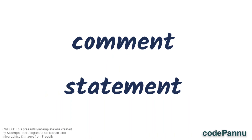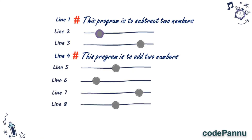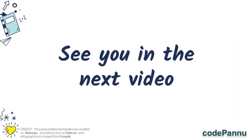This is why we have to tell Python to leave comments out when running the code. We do that using a very special character. The special character used to tell Python that a statement is a comment is the hash symbol. When we put a hash in a statement, Python will know that whatever comes after the hash is a comment and it will leave that part out. There are many ways to write and use comments, and we will see that in our next video.